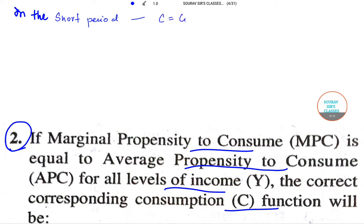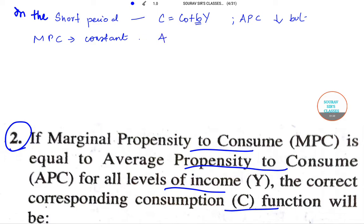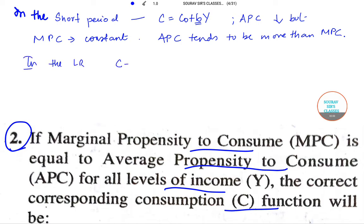In the short period, when our consumption function takes the standard form C = C-naught + bY, the average propensity to consume actually goes on falling but the marginal propensity to consume remains constant. So MPC remains constant but APC is falling. In the long run, we have C = bY, meaning there is no intercept part — no C-naught.